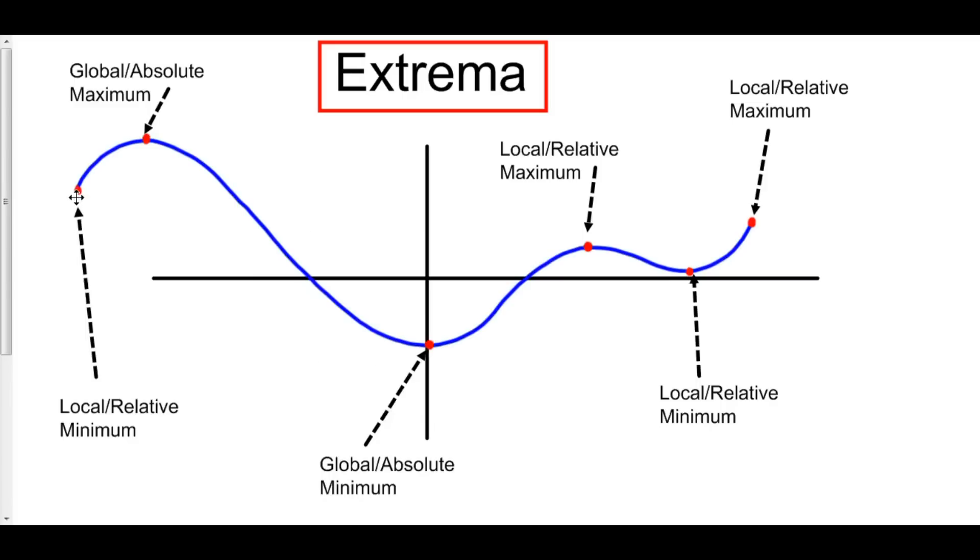And of course, local mins and local maxes are extrema relative to the other points around it. So for example, here, this is not the highest point of the entire function. In fact, this local minimum on the left is actually greater than this local max right here. But the reason why it's a local max is because relative to all of the points around it, it is a maximum.